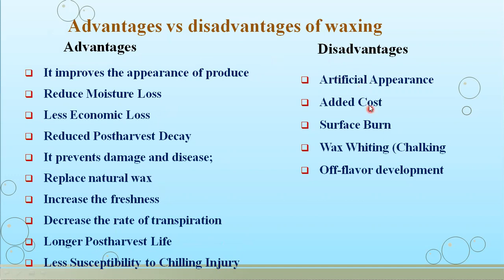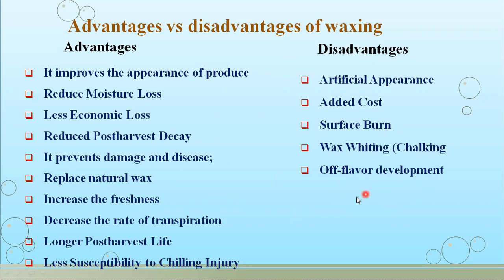This waxing has certain disadvantages. Obviously, applying some artificial petroleum-based waxes gives an artificial appearance to the commodity. It adds more cost due to the use of certain waxing materials. Sometimes surface burning may occur, and wax whitening — meaning a chalky surface — may happen. There can also be off-flavor development. Additionally, there are chances of trapping chemical residues inside the natural surface of the commodity during wax application, and during washing these chemical residues may not get cleaned off, leaving them on the commodity.